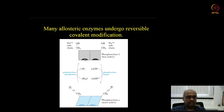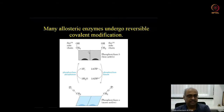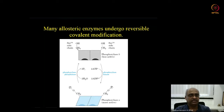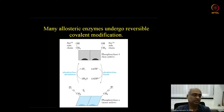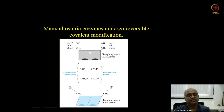Another way of enzyme regulation is covalent modification. For example, glycogen phosphorylase has two subunits, and when the 14th serine's hydroxyl group gets phosphorylated it becomes more active. When both serines in both subunits are phosphorylated the enzyme is active; when the phosphate groups are removed by phosphorylase phosphatase it becomes inactive. This is a very common type of regulation through covalent modification.